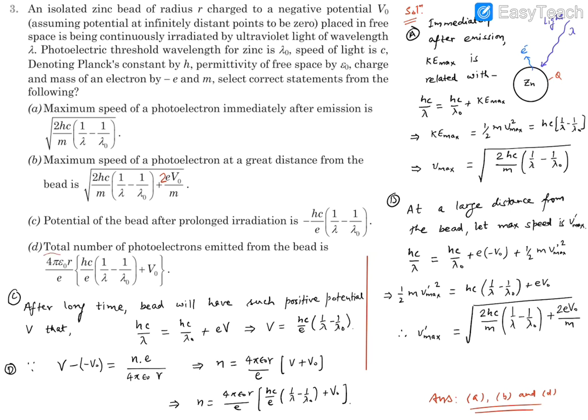Lastly, it talks about the total number of photoelectrons emitted from the bead. When these number of electrons have gone out, it got a positive charge with this potential. Initially it has minus V naught potential. From minus V naught to V, this potential difference has been created by the charges that have gone away. So potential difference, final minus initial, equals the total number of photoelectrons N times the charge of one electron E. This is the total charge divided by 4 pi epsilon naught R, because the potential of a spherical body is Q/4 pi epsilon naught R.